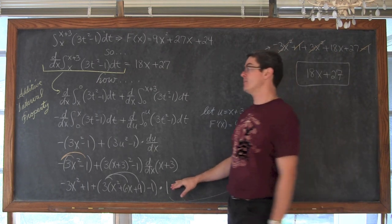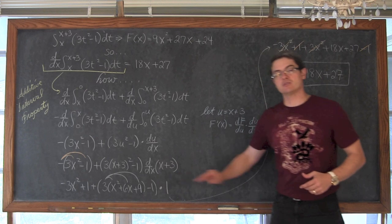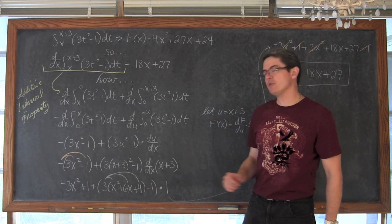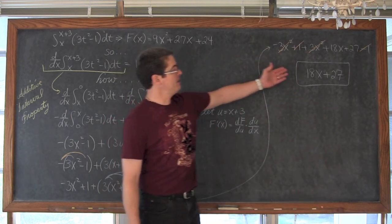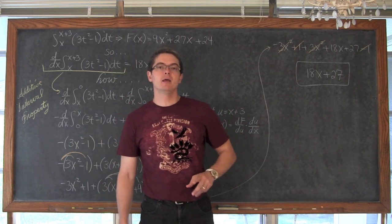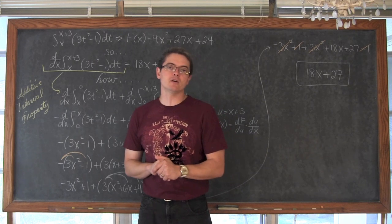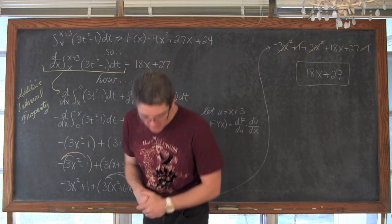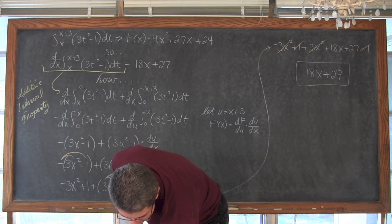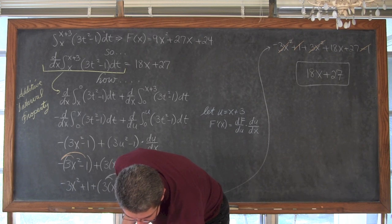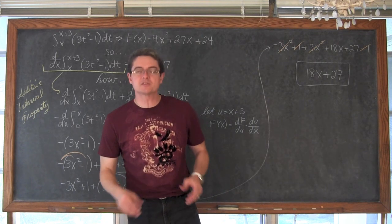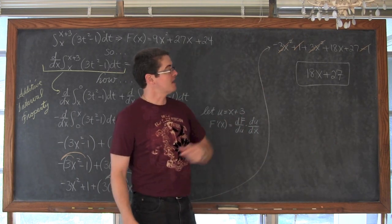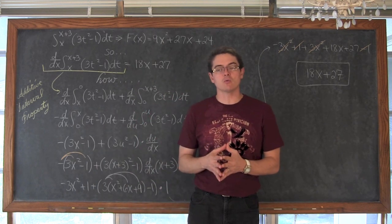This is not always going to happen — if my upper boundary were x squared, this would be 2x here. At this point we finish simplifying and we get 18x plus 27. When we did definite integrals as a function earlier, we found that F of x was equal to 9x squared plus 27x plus 24, and taking the derivative of that gave us the 18x plus 27 we were hoping to arrive at.